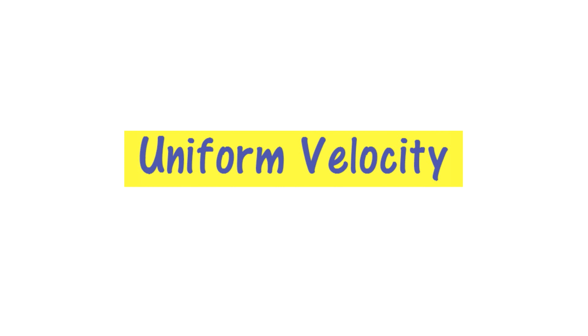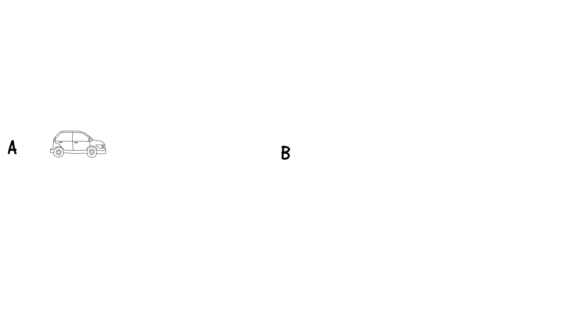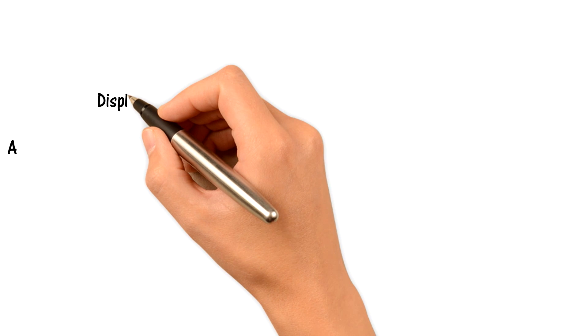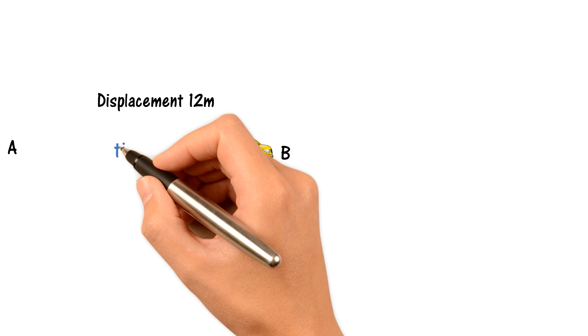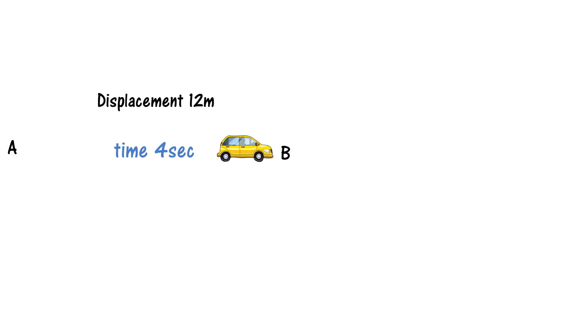To explain uniform velocity, consider a car starting at point A and moving to point B. The displacement from point A to point B is 12 meters, and the time taken by the car to move from point A to point B is 4 seconds.